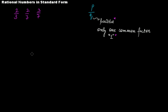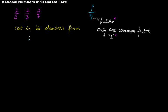What about 3 over 7? Yes, this is also in standard form — 7 is positive, and 3 and 7 have only one common factor, that is one. But what if a rational number is not in its standard form? Whenever your rational number is not in its standard form, you can reduce it to standard form, exactly the same way we learned about reducing fractions to simplest form.